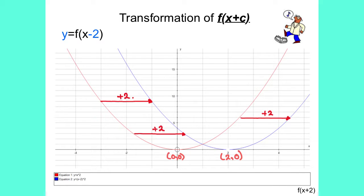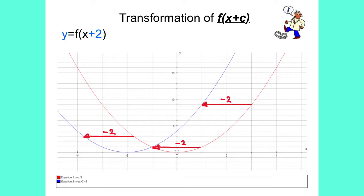The x-coordinates are changed; the y-coordinates remain the same. If we now draw the graph of y equals f of x plus 2, the original graph of x squared is moved two spaces to the left. Instead of moving in the positive direction, it is moved in the negative direction by two spaces. So the point 0, 0 becomes the point minus 2, 0. Again, the x-coordinates are changed; the y-coordinates remain the same.